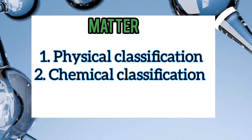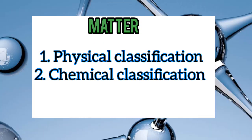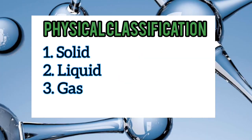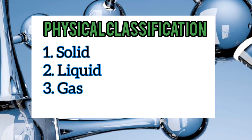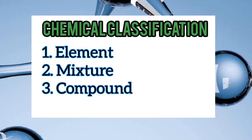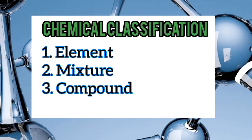Elements, mixtures and compounds are the chemical classification of matter. Matter is classified into the physical classification and the chemical classification. The physical classification, which you already know, is solid, liquid and gas, while the chemical classification is what we call elements, mixtures and compounds.